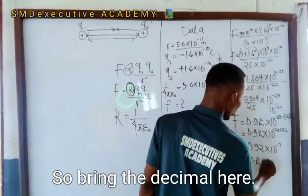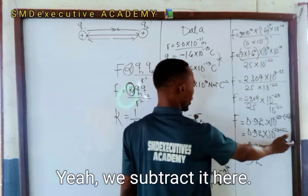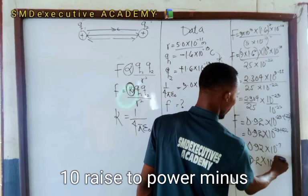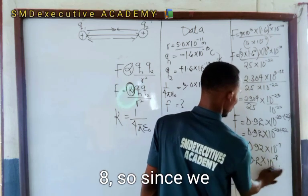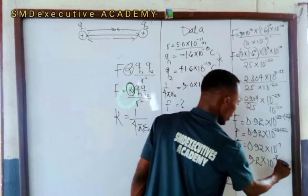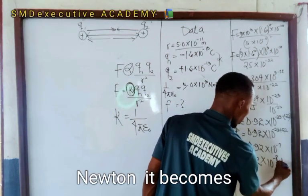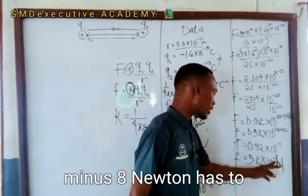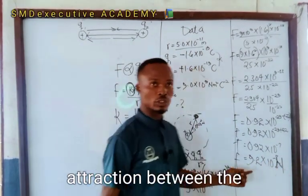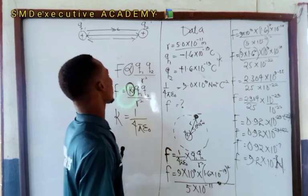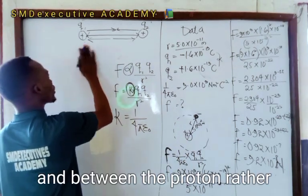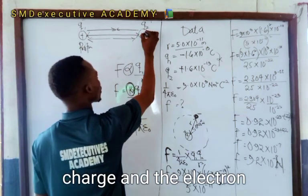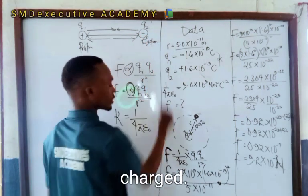Since we can't leave the answer as 0.92, we move the decimal place, giving us 9.2 times 10 raised to power minus 8. Since we calculated the force of attraction, the unit is newtons. Therefore the electrostatic force of attraction between the proton, which is positively charged, and the electron, which is negatively charged, is 9.2 times 10 raised to power minus 8 newtons.